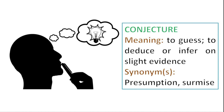The next word is conjecture, which simply means to guess or to deduce or infer on slight evidence — it's a presumption. A sentence: statements should be based on facts and not conjecture. You can create a theory or opinion about something without really basing it in fact. The original definition of conjecture from Old French actually means an interpretation of signs and omens — which are subjective, so whatever sense you make of it, somebody else might make a different sense. Like maybe some weather reports are conjectures.